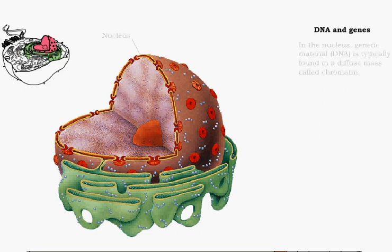The process of protein production begins in the nucleus. During most of a cell's lifespan, the DNA molecules are found in a diffuse mass called chromatin.